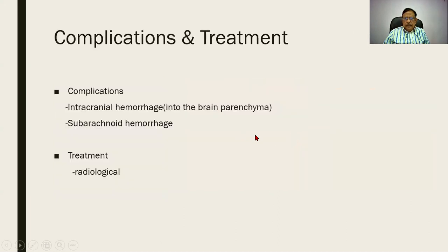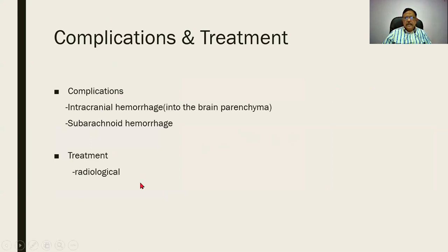The complications include intracranial hemorrhage into the brain parenchyma or subarachnoid hemorrhage. One clinical differential diagnosis is hypertension, in which these hemorrhages also occur and must be differentiated. The treatment for a berry aneurysm is radiological.